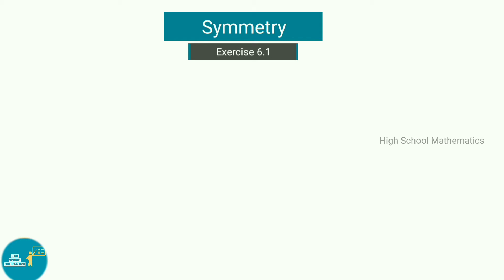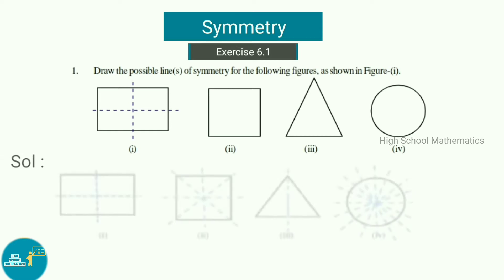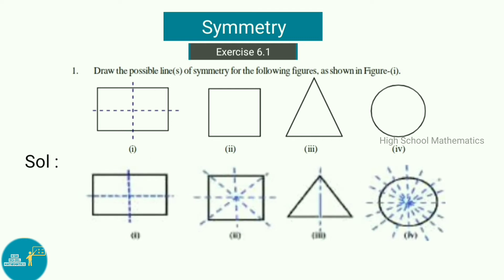Now let us see Exercise 6.1, Question 1: Draw the possible lines of symmetry for the following figures. For the first figure, a rectangle, the lines of symmetry are two. For the second figure, a square, the number of lines of symmetry is four, so we have drawn four lines of symmetry here.